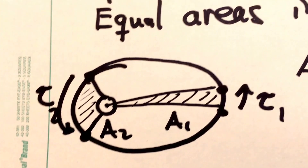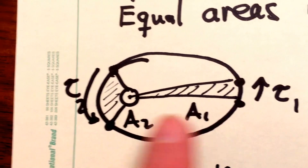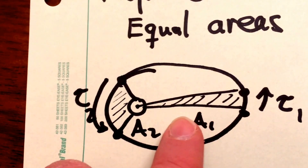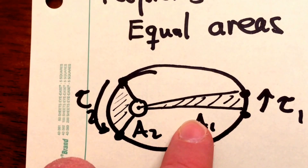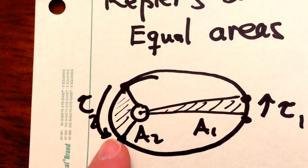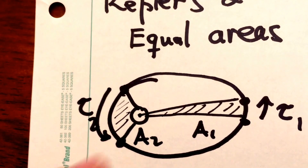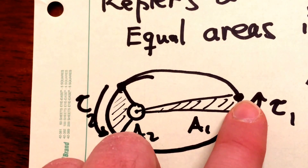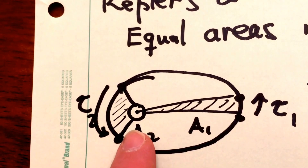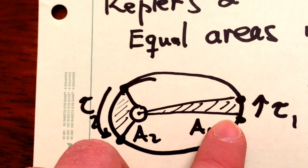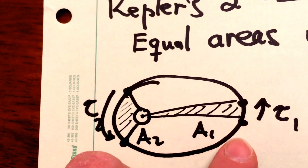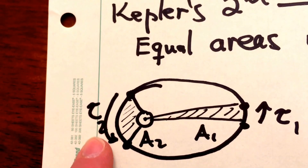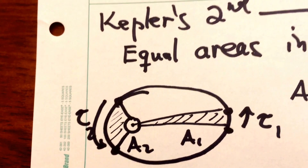If tau 1 is equal to tau 2, then even though this area in the ellipse is long and skinny, it'll be exactly equal to the area over here which is short and squat. That means the planet has to be moving very slowly around in its orbit over here because the radius vector is so big — even a little time means it sweeps out quite a lot of area. So the planet has to move very slowly when it's far from the sun and very quickly when it's near to the sun in order for these two areas to be equal.